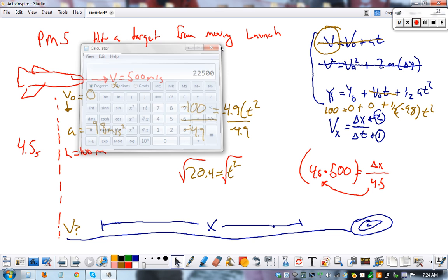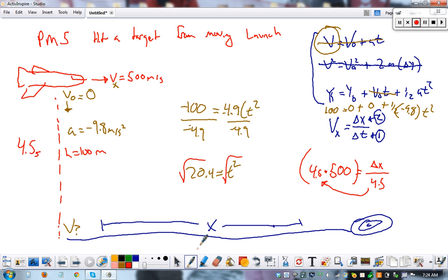22,500 meters. So the plane has to let go of its target when it's 22,500 meters away. It's at 100 meters up going that fast. That's about two miles I think.